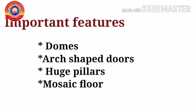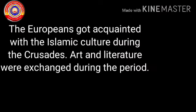The main features of the Carolingian style are: first, domes — the roof of a building typically with a circular base; second, arch-shaped doors; third, huge pillars — tall vertical structures of stone; and fourth, mosaic floors — floors covered with mosaic.